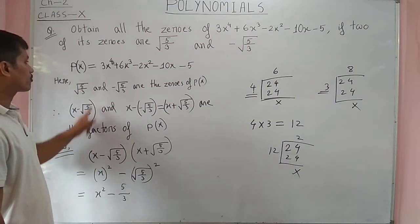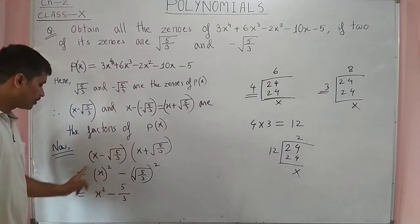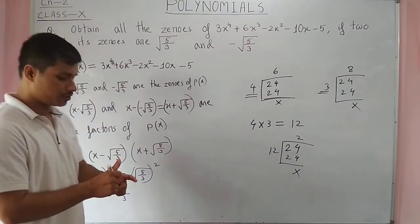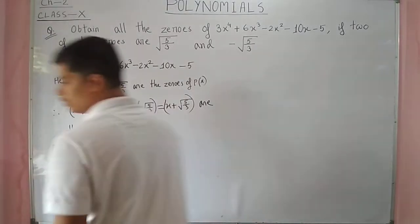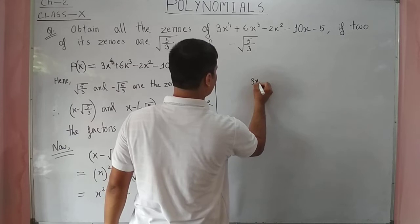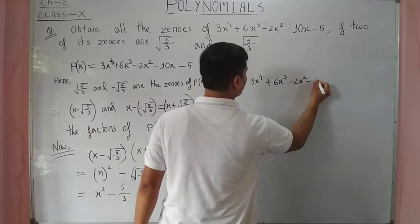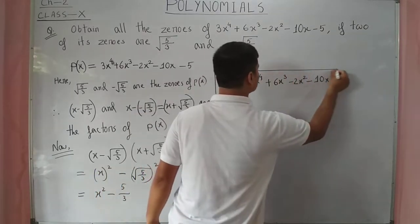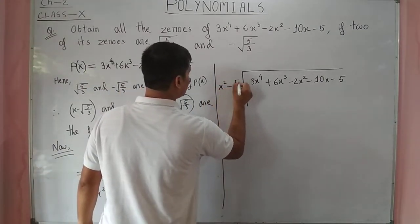So: (x - √(5/3)) is a factor of p(x), (x + √(5/3)) is a factor of p(x), therefore their product (x² - 5/3) is also a factor of p(x). Now we will divide 3x⁴ + 6x³ - 2x² - 10x - 5 by x² - 5/3.